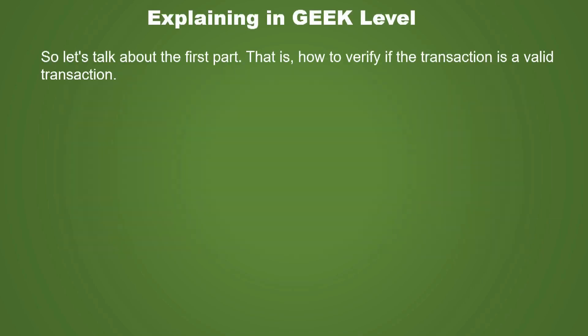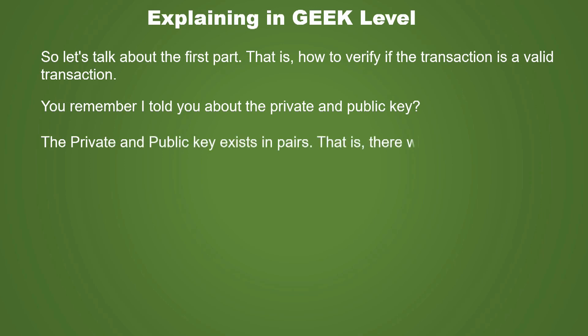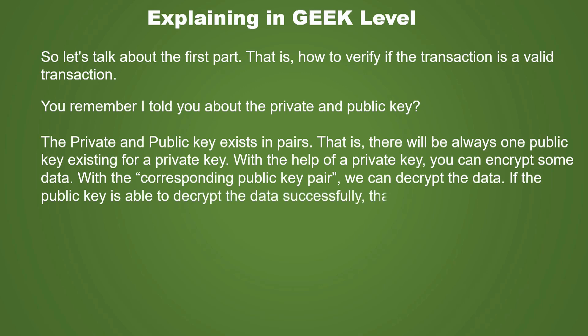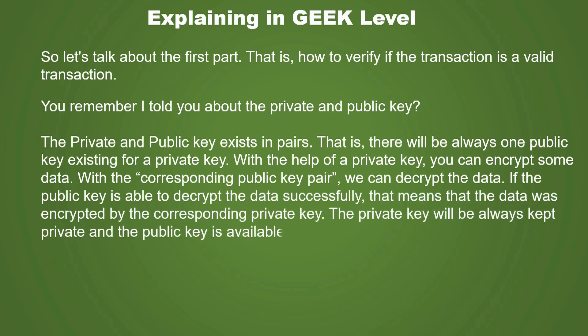So first, how do we verify if a transaction is valid? You remember the private key and public key — they exist in pairs. There will always be one public key existing for the respective private key. With the help of a private key, you can encrypt some data. With the corresponding public key pair, we can decrypt the data. If the public key is able to decrypt the data successfully, that means the data was encrypted by the corresponding private key. The private key is always kept private and the public key is available to anyone.